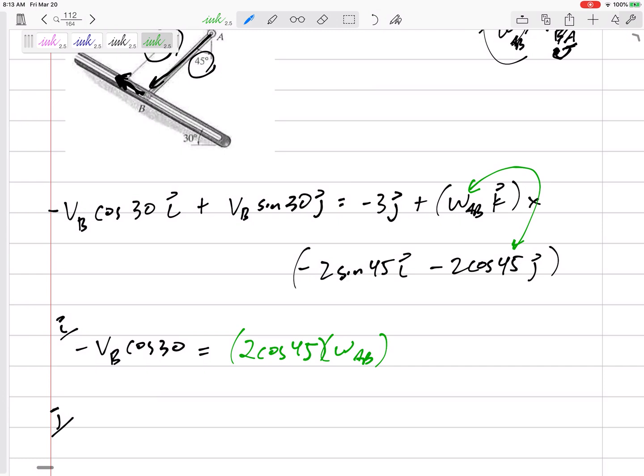So 2 cosine 45 times omega_AB, and positive or negative? k cross j—if you need to go back, maybe to this—how I memorize my cross products: k cross j going this way would be negative i. I have a negative right there, so it would be positive right there. That equation has two unknowns.